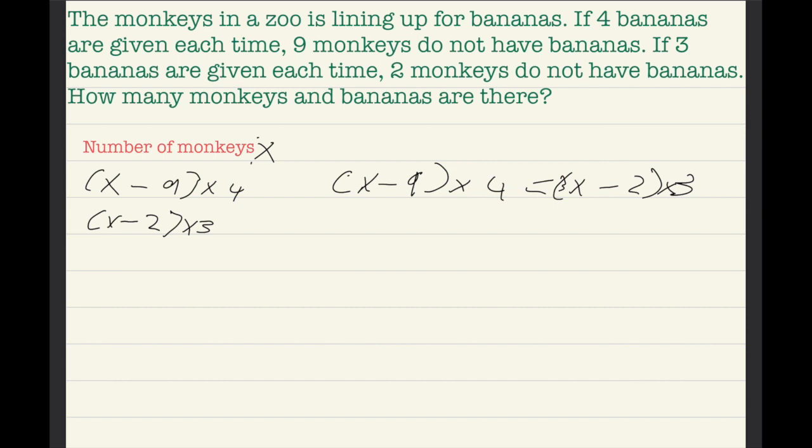So, X times four equals four X, then minus 36, because nine times four equals 36. And then equals three X minus six, because three times X equals three X, then minus two times three, which is six.